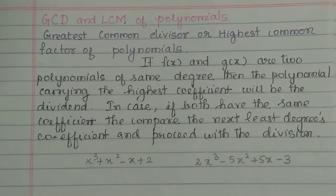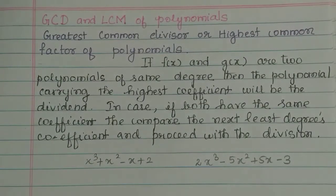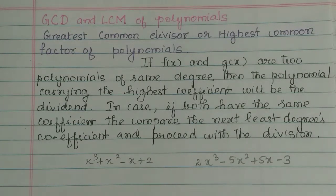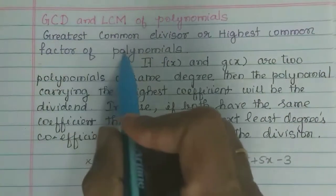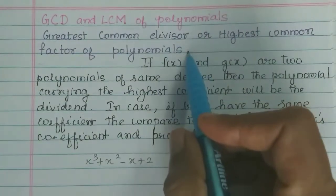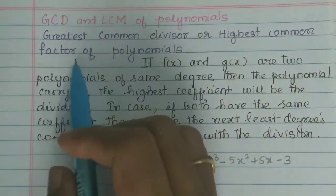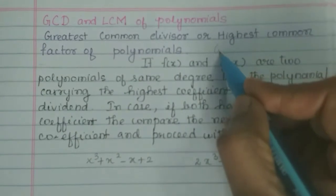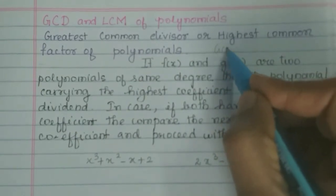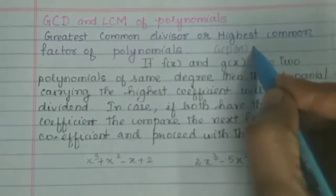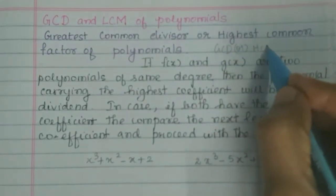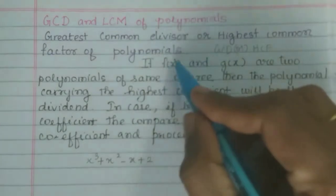Hi students. In this video we will talk about GCD and LCM of polynomials. First, GCD. GCD is the greatest common divisor, or highest common factor — that means HCF. So we will look at GCD or HCF of two polynomials.